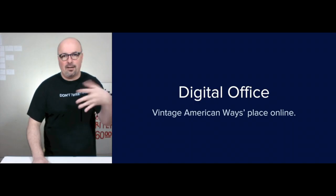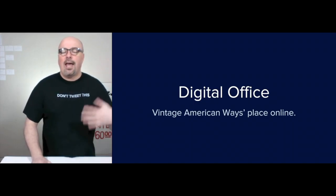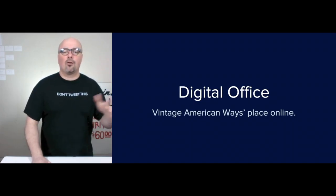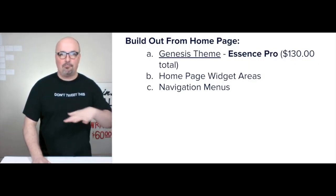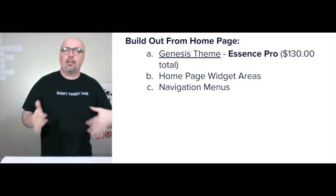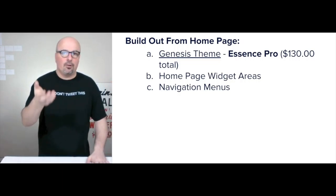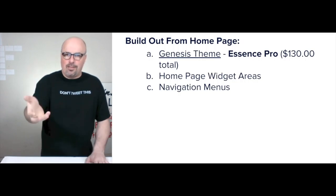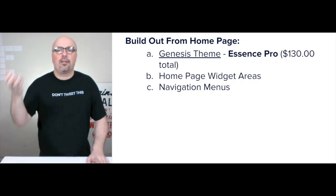The pressing problem is a lack of access to an organized digital handbook that explains the six basic American values concisely, and no one is empowering average Americans in their pursuit of the American Dream. So moving to the digital foundation — there are three parts. We start with the website, the digital office. It's the place online for the Vintage American Ways brand.